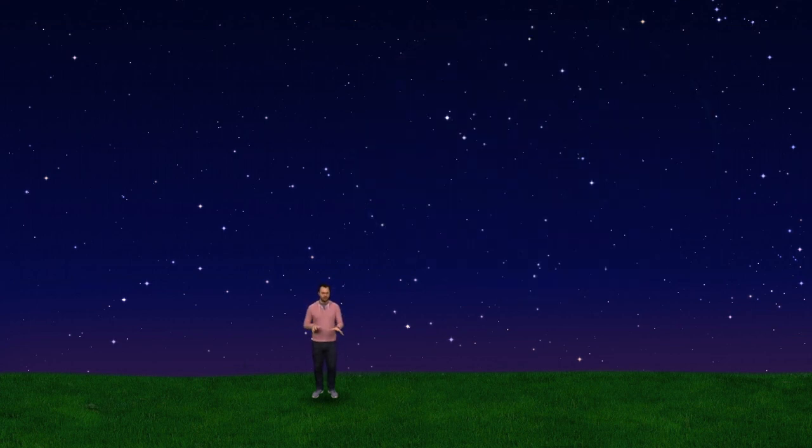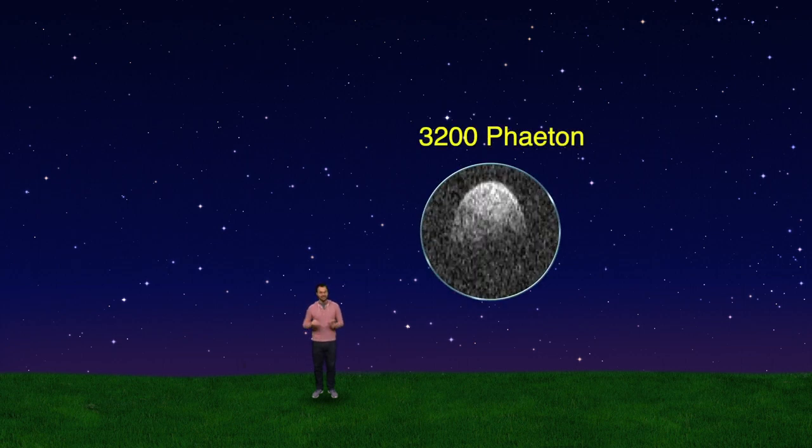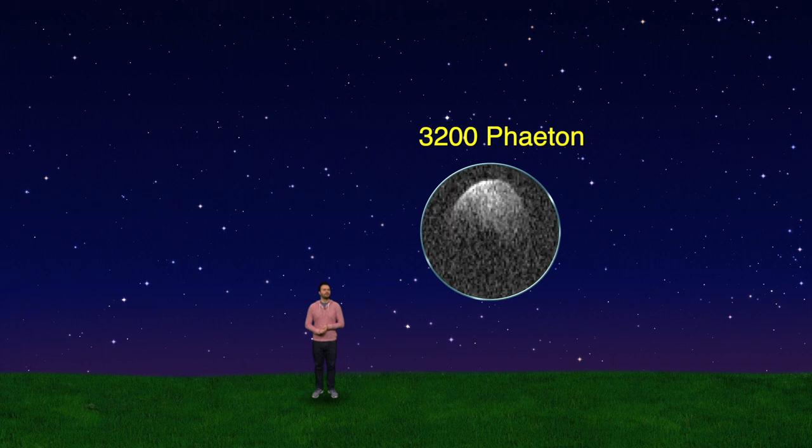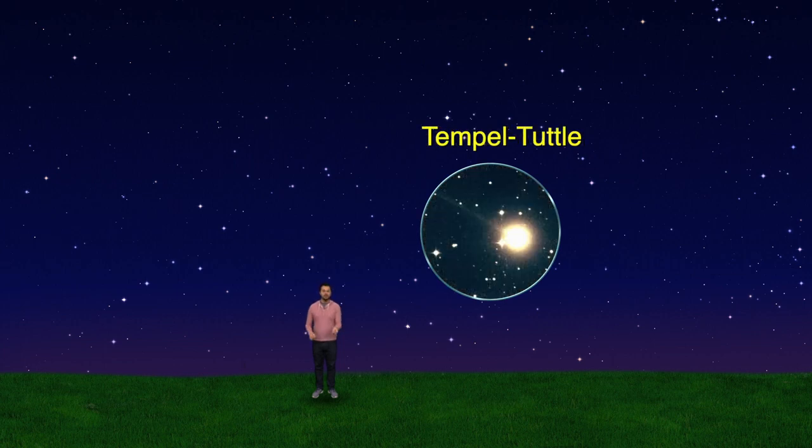Some meteor showers are better than others because of the type of debris that's included in that section of our orbit. The Geminids are caused by a bizarre blue rock comet named 3200 Phaeton, and the Leonids are left by comet Temple Tuttle, which passes Earth every 33 years.